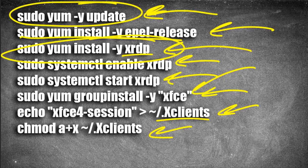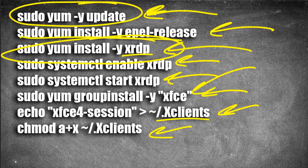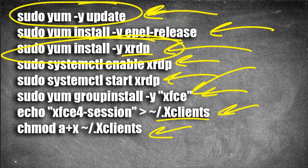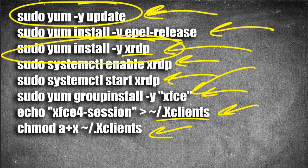You'll enter sudo yum update to update your packages — that'll take some time. Then you will install the EPEL release so you can actually install XRDP. You will not be able to install XRDP without that command. Then you'll run the XRDP installation, enable it with systemctl, and then start it. Some guides will want you to allow stuff through the firewall. If you're setting this up on your own CentOS distribution the firewall might be enabled by default, but in Azure it's not. When you install XRDP it'll allow itself through the SELinux stuff, so you should be fine.